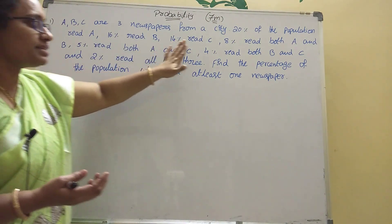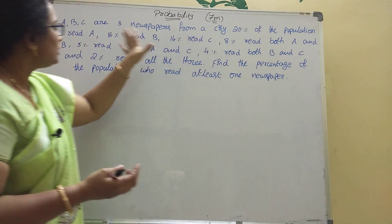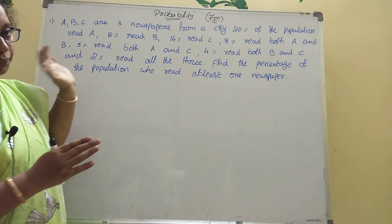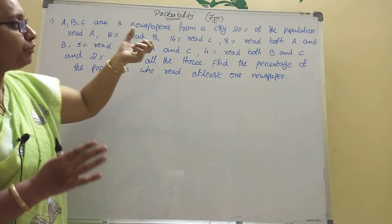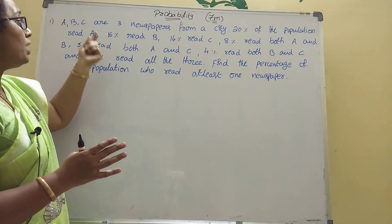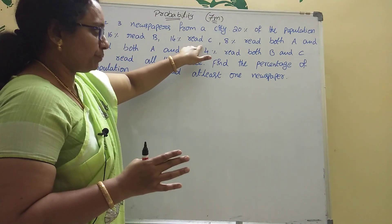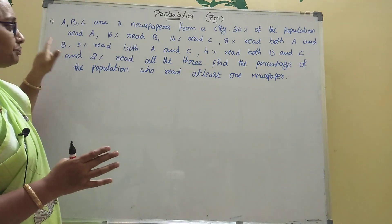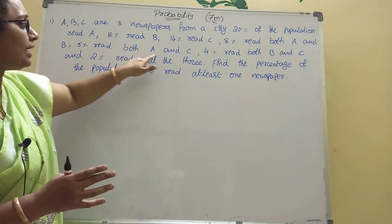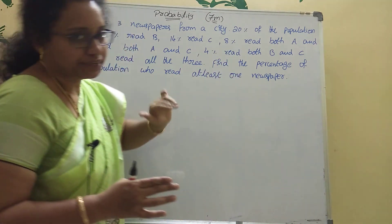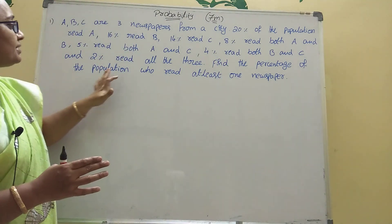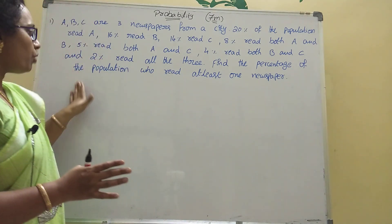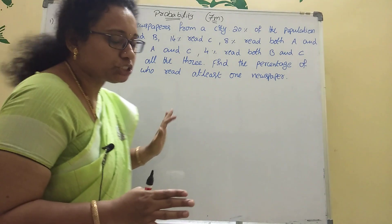From a city, three newspapers: 20% of the population read A, 16% read B, 14% read C. 8% read both A and B, 5% read both A and C, 4% read both B and C, and 2% read all three.